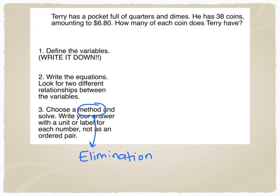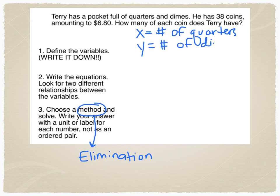Terry has a pocket full of quarters and dimes. He has 38 coins total, amounting to $6.80. How many of each coin does Terry have? Well, you're going to see a lot of these questions. We're going to start by defining variables. Let's define X as the number of quarters. Y is going to be the number of dimes. So now I look for two relationships between my variables. I know that I have a total of 38 coins. So I know that the number of quarters I have plus the number of dimes I have has to equal 38. So there's our first equation.